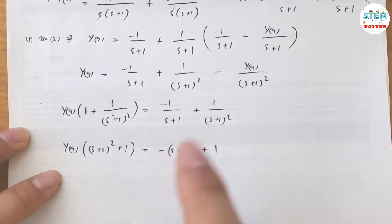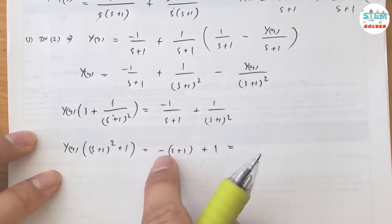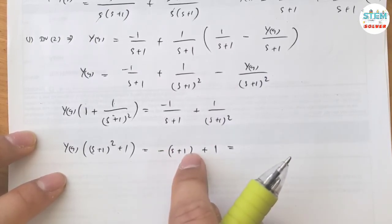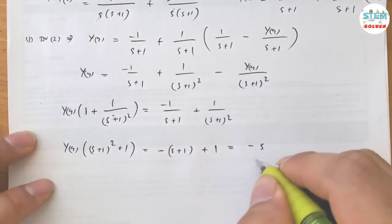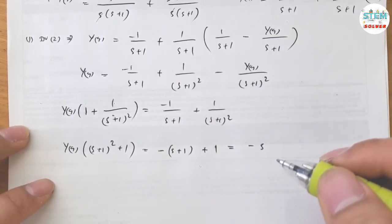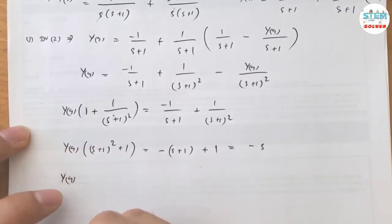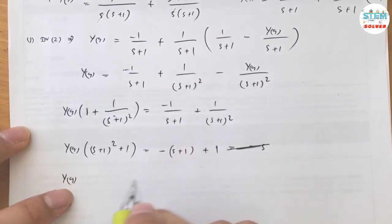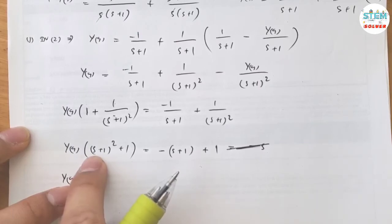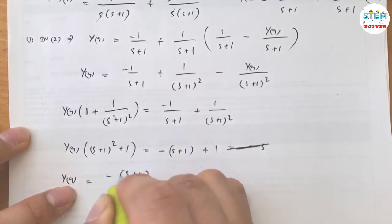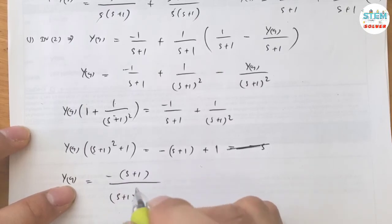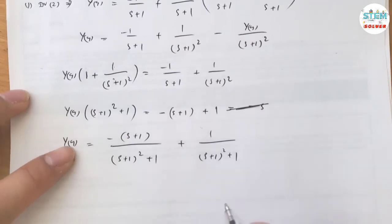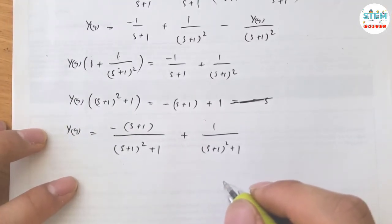Divide both sides. This factor cancels out, so I have negative s minus 1 plus 1, which is negative s. I have negative s plus 1 over s plus 1 squared plus 1, plus 1 over s plus 1 squared plus 1. Something looks wrong — let me double check.